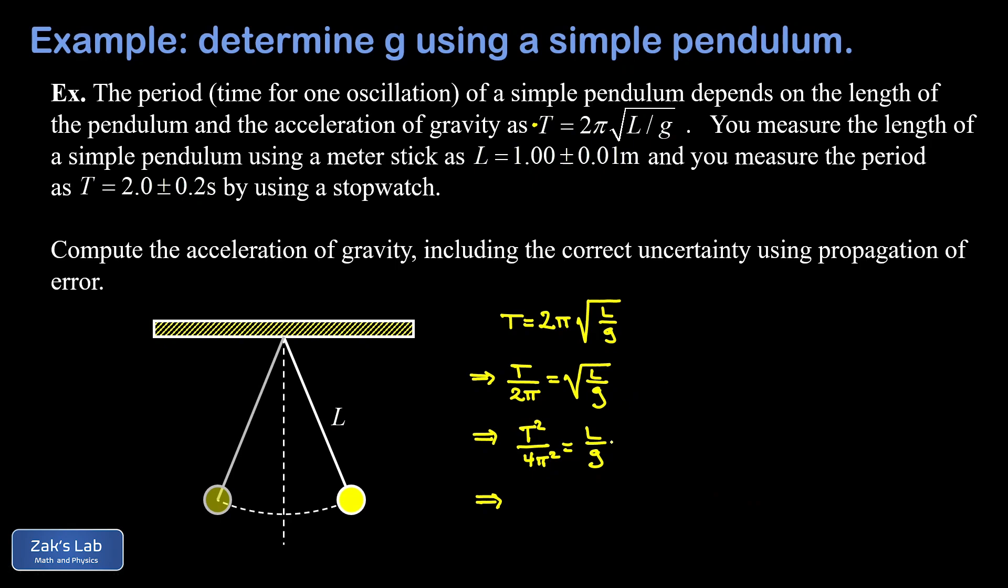So we get t squared over 4π squared equals L over g. We'll do a couple things in the last step. I'm going to multiply both sides by g to get g on the left-hand side, and at the same time multiply by the reciprocal of this t squared over 4π squared. So on the right-hand side, we're left with 4π squared L divided by t squared. There's an expression for little g in terms of the length of the pendulum and the period of oscillation.